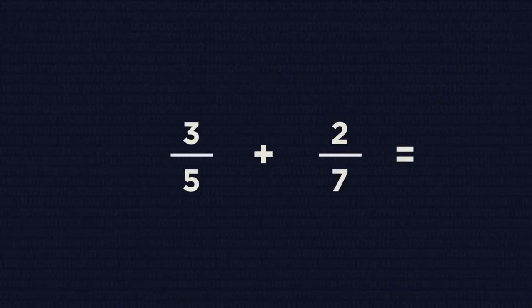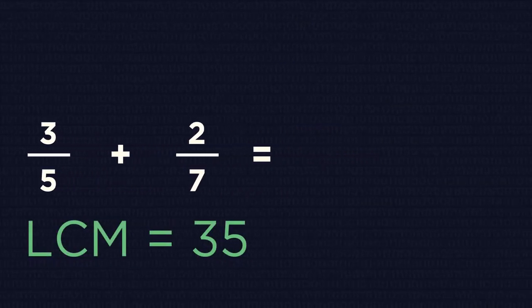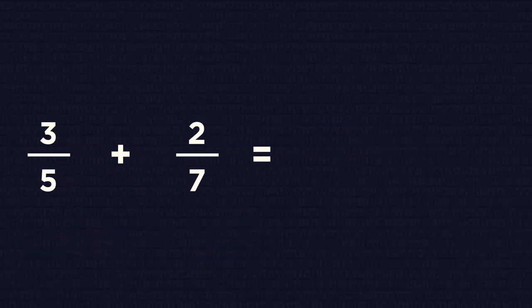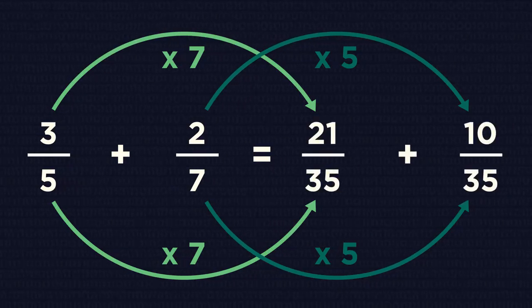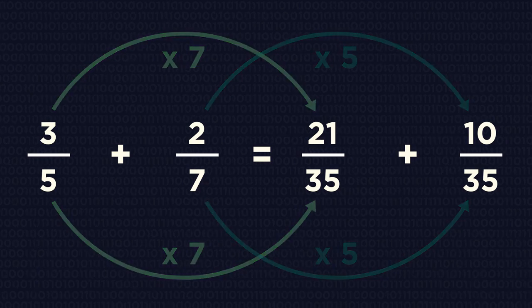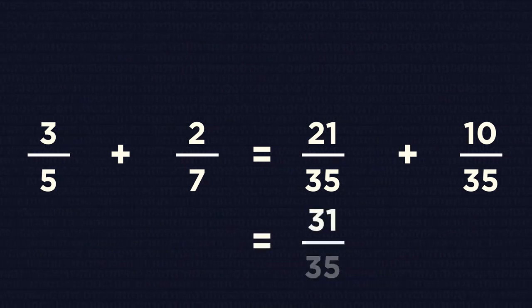Have a look at this example. First, we need to find the lowest common multiple of our denominators, 5 and 7. Then, we need to convert the fractions. And finally, we need to add the numerators. So, our answer is 31 over 35.